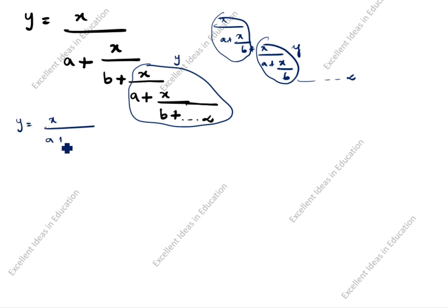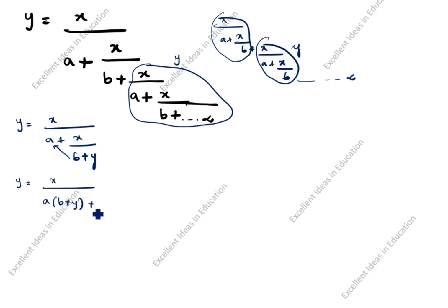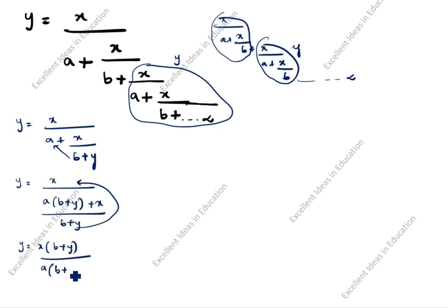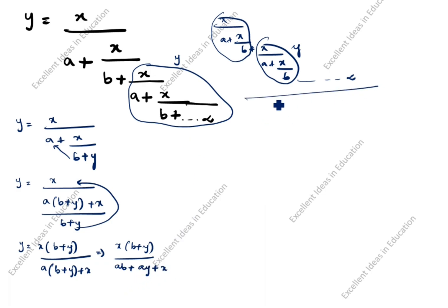So what is the question now? y is equal to x divided by a plus (x/b + y). We cross-multiply: y is equal to x divided by — opening the bracket — (b + y) divided by a times (b + y) plus x. So y equals x(b + y) divided by a(b + y) plus x, which gives x(b + y) divided by ab + ay + x.